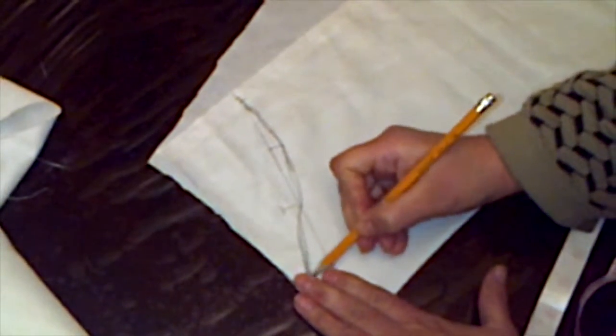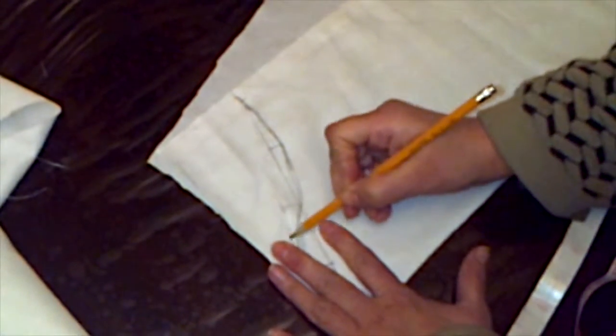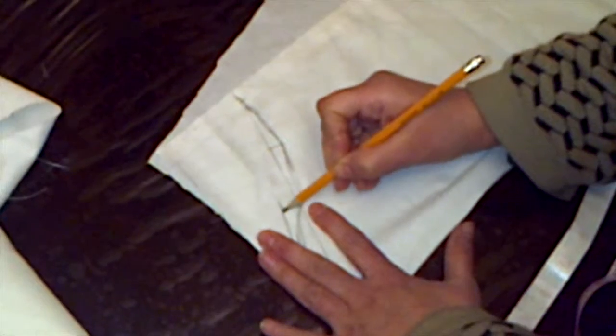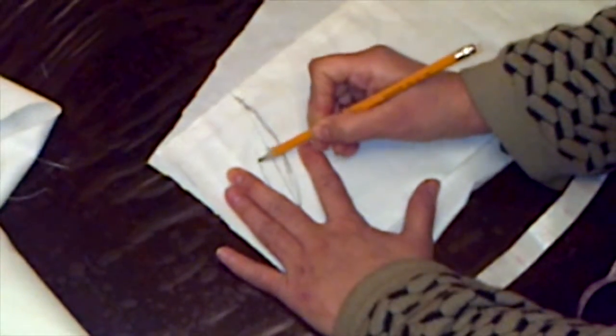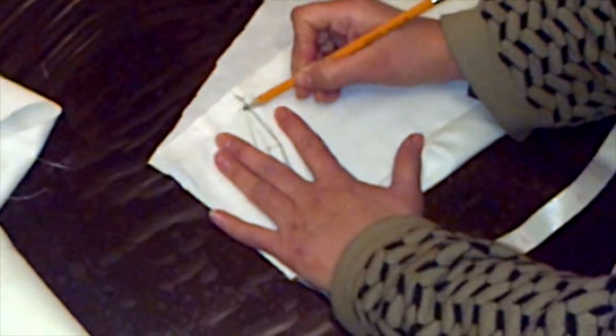We will make a nice curve here too, but we won't cross the diagonal line for the back. We will just take it towards the end of the sleeve in a nice curve.